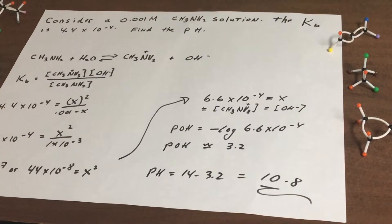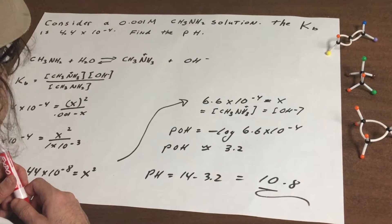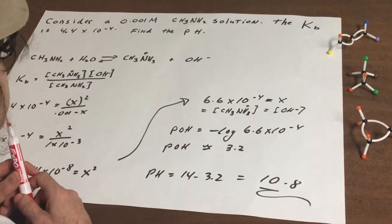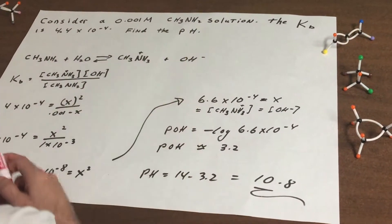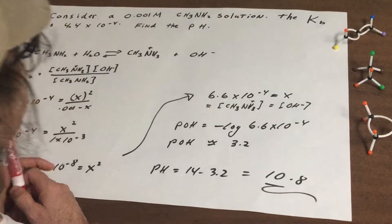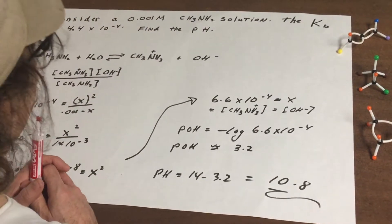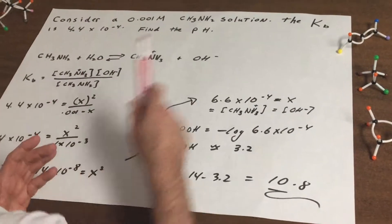This is a tough one but this is for those students who really want to excel and make sure you got a great understanding of the material. What we want to do is consider a 0.001 molar solution of methylamine and the Kb is given as 4.4×10^-4 and what I want to do is to find the pH. Now what I would do on a calculation in which they give you either a Ka or a Kb, the question is what's the first step?